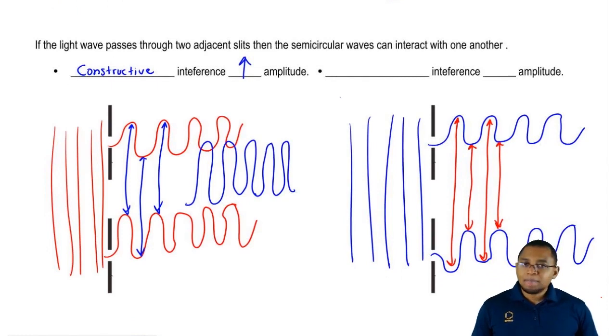But here, it's the opposite. The high point of the wave is matching up with the low point of the wave which is called the trough. This actually causes them to destroy each other.